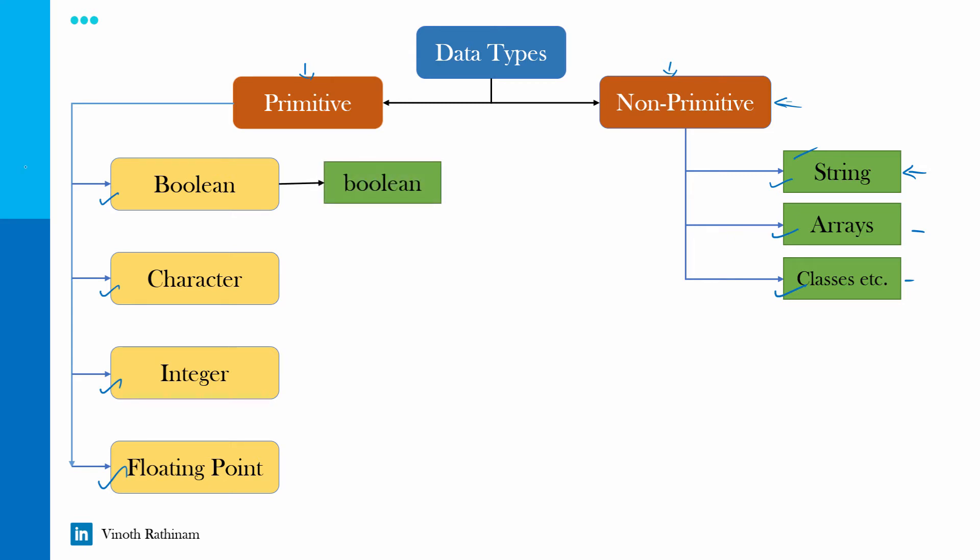In the primitive data type, first one is boolean. So what is boolean? True or false, these two values are considered as boolean. To save these two values, we have to use the boolean data type which consumes very less memory allocation. The syntax will be boolean variable name equal to true or false based on the scenario. And this data type we use it to set the flag for looping statement.